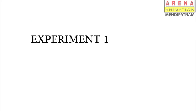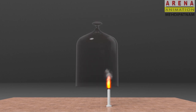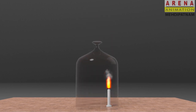Procedure, Experiment 1. Light up the candle first. Now keep the bell jar on the burning candle. Wait for some time to see the result. Within seconds, the light of the candle is put off.